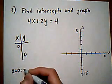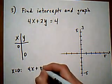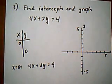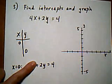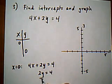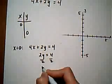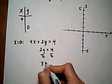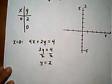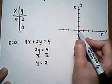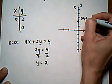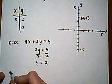So first x is 0. Start with the equation. 4x plus 2y equals 4. If x is 0, that term goes away and I'm left with 2y equals 4. Solve by dividing by 2, and we get y equals 2. So when x is 0, y is 2. And let's go ahead and graph that point. x is 0, y is 2.